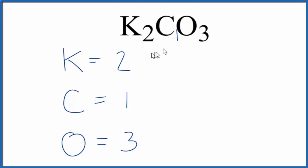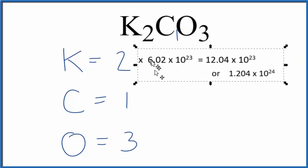Sometimes you're asked to find the number of atoms of, for example, potassium in one mole of K2CO3. In that case, you take the number of potassium atoms and you multiply that by Avogadro's number.